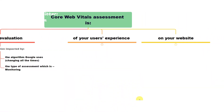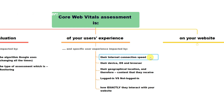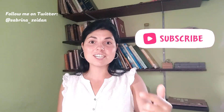Another part of Core Web Vitals assessment is your users' experience. Their experience is impacted by their internet connection speed, their device, their browser and operating system, their geographical location, and the content they see because of their geographical location. Whether they are logged in or not logged in, and how exactly they interact with your website. I'm making a video with prominent examples where changes in users' behavior or user groups made enough impact that Core Web Vitals stopped passing — these are edge cases but they make interesting stories. Subscribe to this channel because I'm working on that video right now.